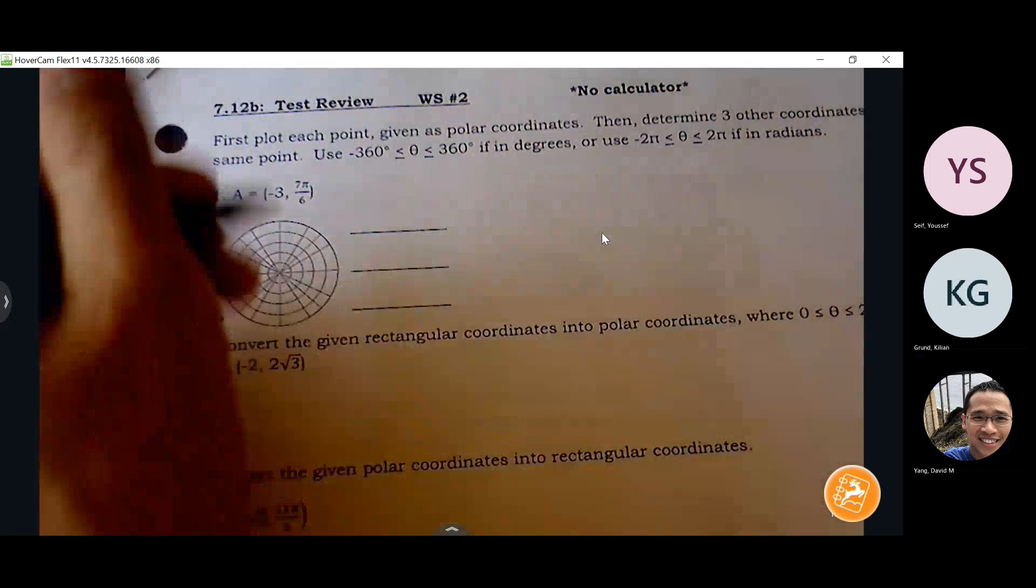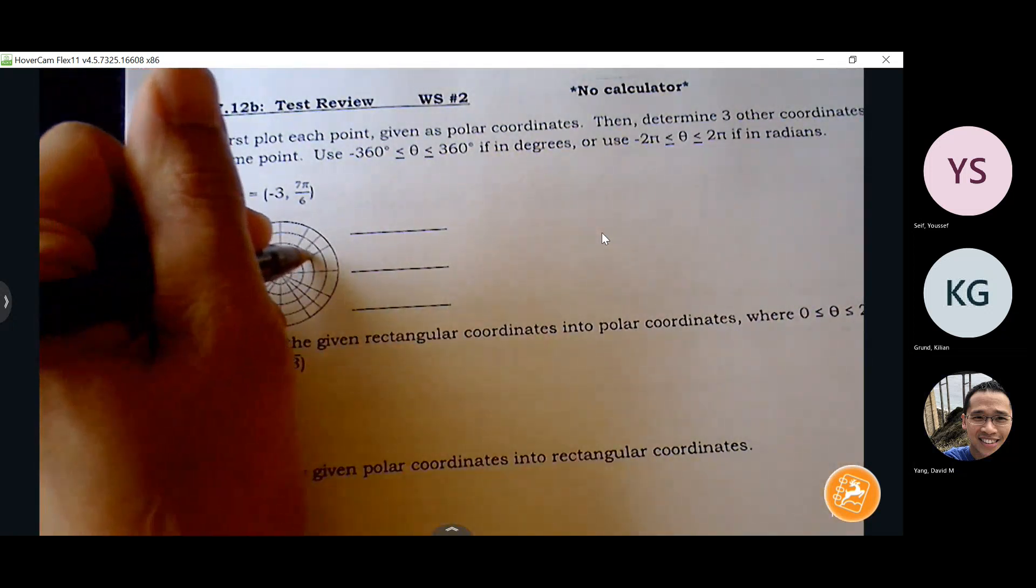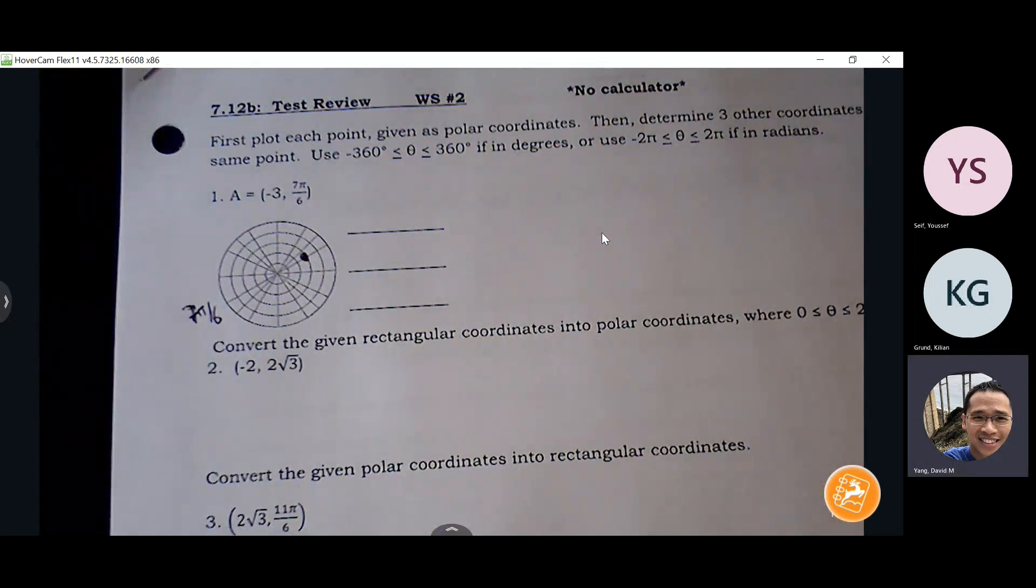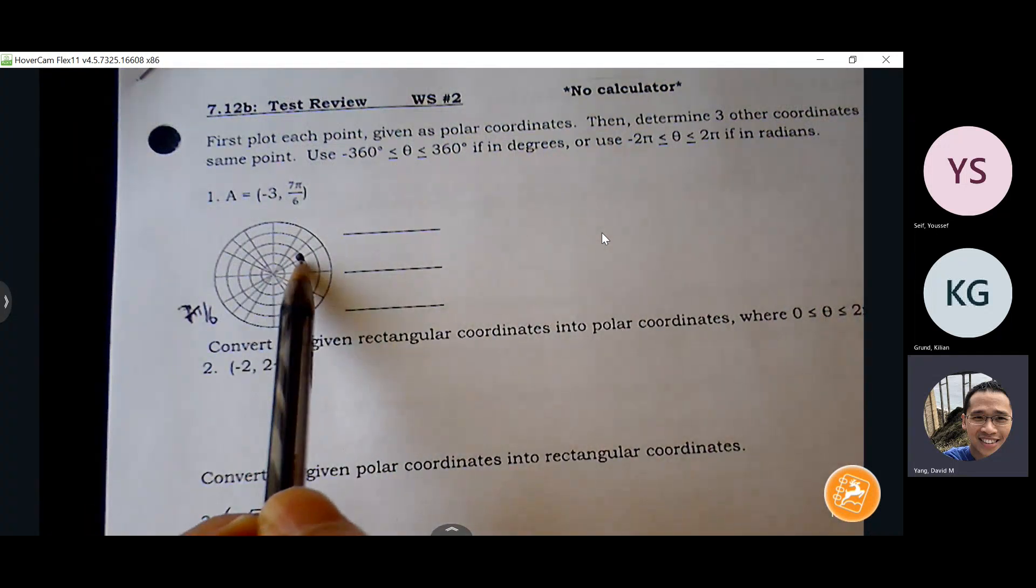I'm always going to be starting at the origin. So I'm going to be walking away. So three units away is going to be in the first quadrant. One, two, three. Okay, so that makes sense. So now I want to be able to create three other ordered pairs that also hits the same point.